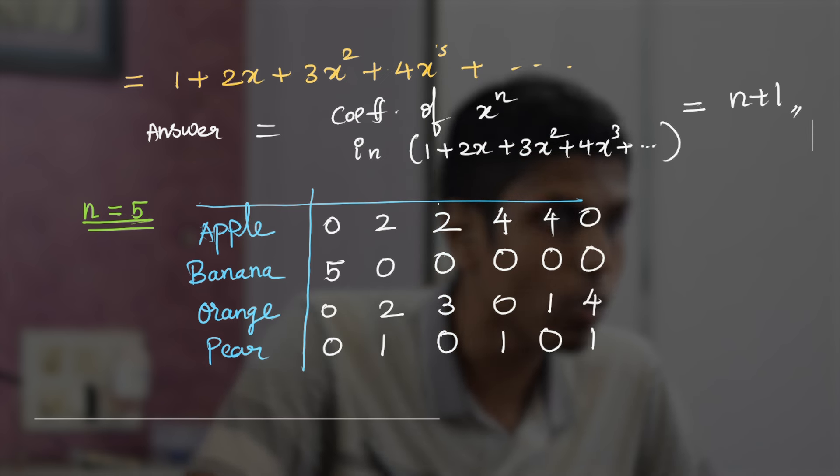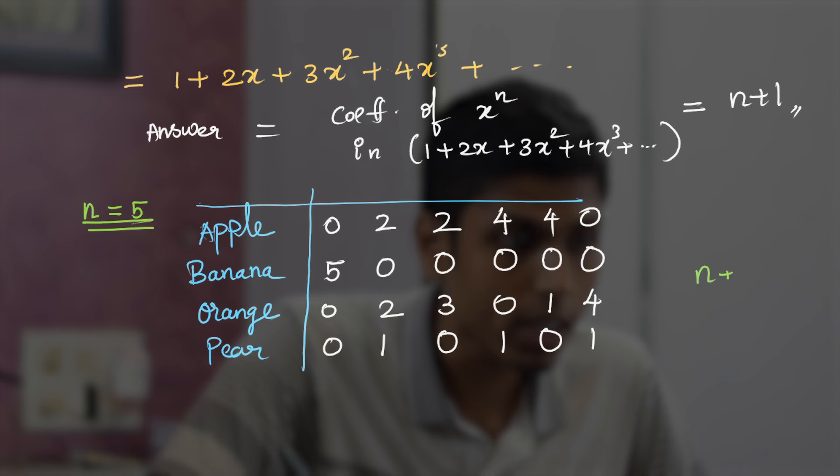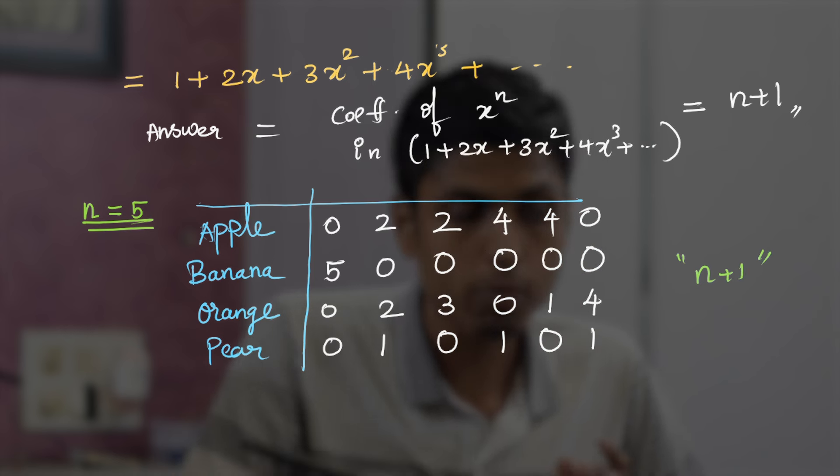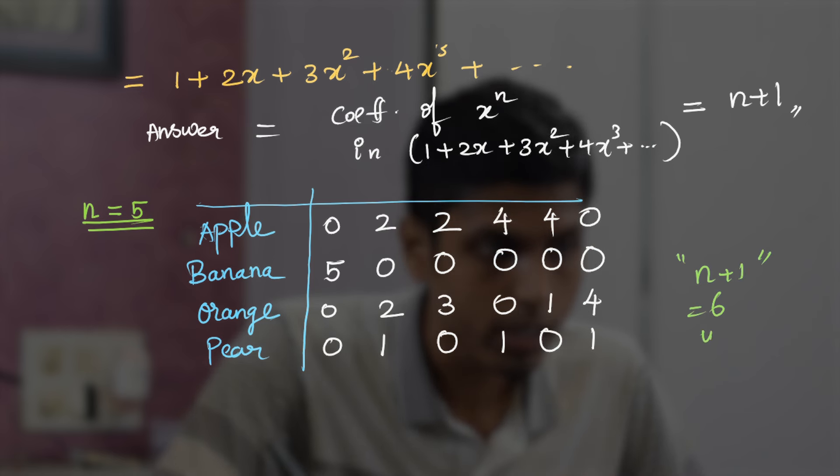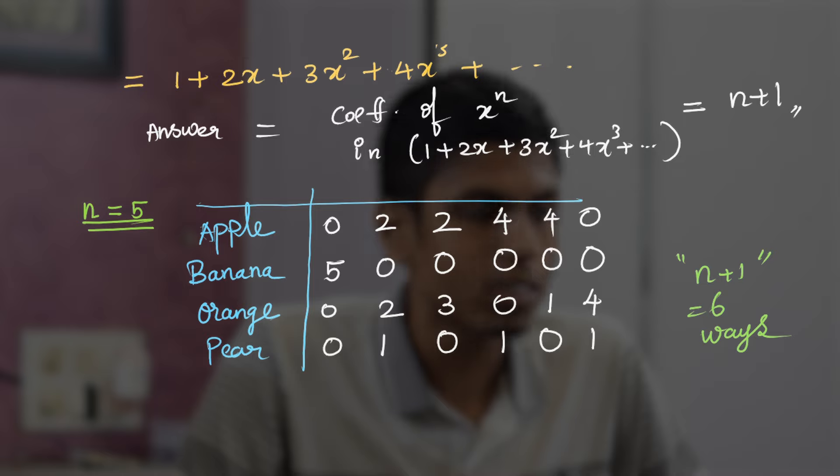So these are 6 possible salads formed with 5 fruits. And that exactly coincides with our answer n + 1. Because n is 5, n + 1 equals 6—6 ways to form the fruit salad. So thus we have verified that.